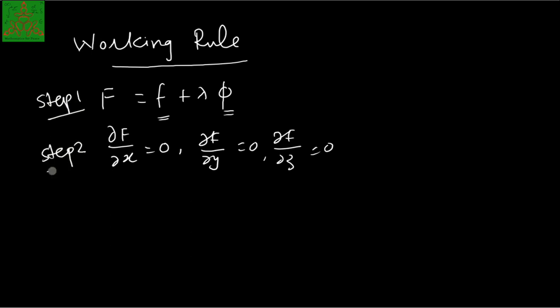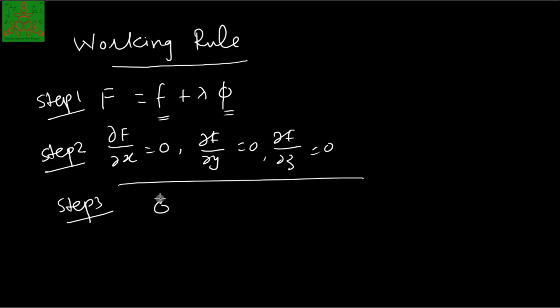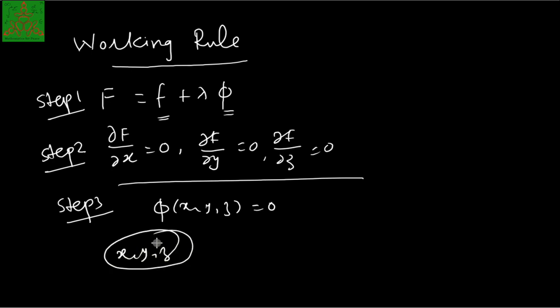Step 2 is solving these equations. Step 3: solve these equations together with phi(x, y, z) = 0 to obtain the values of x, y, z, which are the extremum values of the function f(x, y, z). A drawback of the Lagrange method is that we cannot determine the nature of the stationary points — that is, we cannot determine whether the stationary points give a maximum or minimum value. It depends on the physical problem you are dealing with.